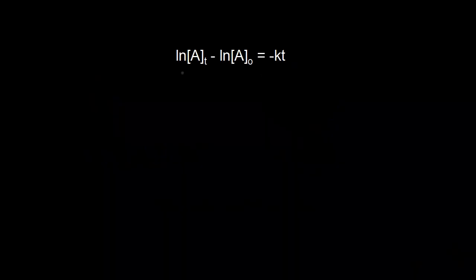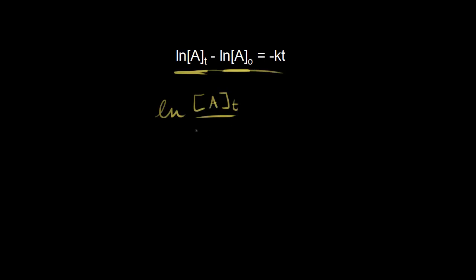Here we have one form of the integrated rate law for a first order reaction, and we're going to keep going with the math here so we eventually will talk about the half-life. On the left, the natural log of the concentration of A at time t, minus the natural log of the initial concentration of A, is the same thing as the natural log of the concentration of A over the initial concentration of A — that's just the log property. And this is equal to negative kt, where k is your rate constant.